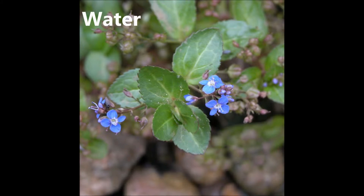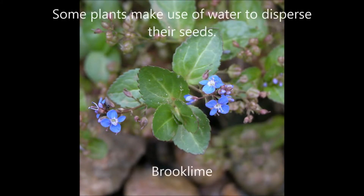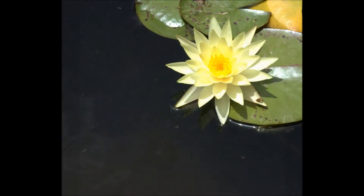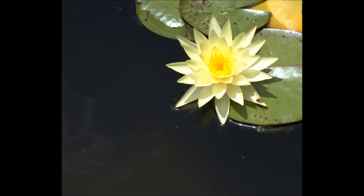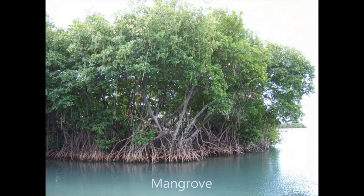Dispersal of Seeds by Water. Some plants make use of water to disperse their seeds. Plants which grow beside water often rely on water to transport their seeds. They may produce light seeds which float, or there may be fluff that helps buoyancy. Trees found on tropical beaches often have their seeds carried by the sea, with woody waterproof coverings which enable them to float in salty water for long periods. Seeds of some tropical trees can even travel along ocean currents to land on distant shores. Seeds spread by this method include sea lime, yellow water lily, and mangrove.